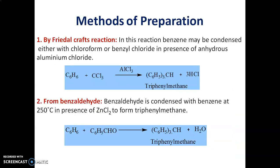Let us see the different methods of preparation of Triphenylmethane. Triphenylmethane can be prepared by Friedel-Crafts reaction. In this reaction, benzene may be condensed with chloroform or benzyl chloride in the presence of a Lewis acid like anhydrous aluminium chloride to give Triphenylmethane as the end product.